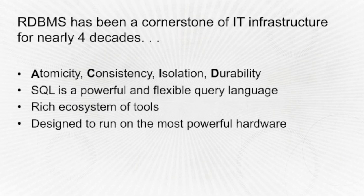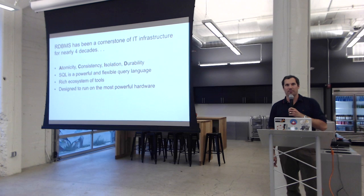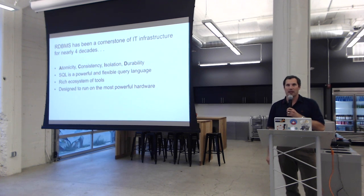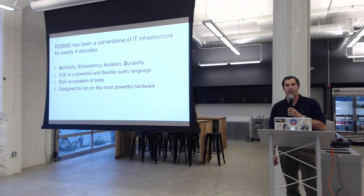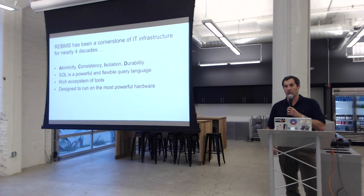The relational database has been a cornerstone of IT infrastructure for nearly four decades. Anyone who's done software engineering in the last 30 years has touched one. It offers compelling features: ACID compliance — atomicity, consistency, isolation, and durability. You have atomic transactions, a consistent schema, isolation so transactions execute as if in complete isolation, and durability so if the database crashes you can restore your data. NoSQL databases support usually some but not all of these, and there are trade-offs as a result.